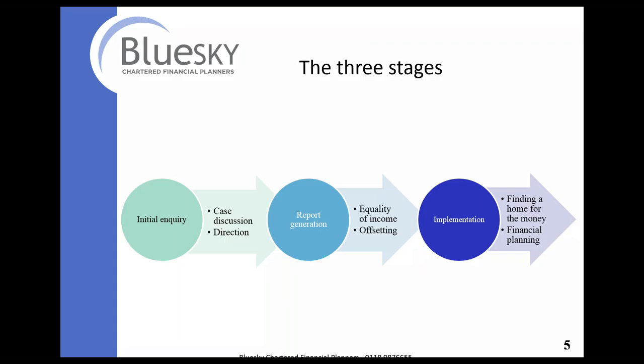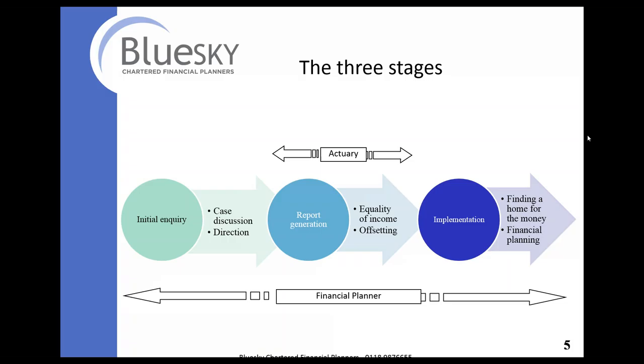Someone has raised a question: the slide says 'equality of income' — why not equality of capital? Case law supports that equality of income involves discrimination. There are some judges in some areas of the country who just will not countenance equality of income and deal only with equality of capital. There are some judges who think equality of income is the right way to go. In the case of M&M, the judge decided equality of capital was appropriate in that particular case. So although the slide says 'equality of income,' that's not the only thing we're going to be discussing. What's the difference between the actuary and the financial planner? We work quite closely with a couple of actuaries. An actuary will do the number crunching and produce a pension sharing report — and if that's all you want, that's absolutely fine.